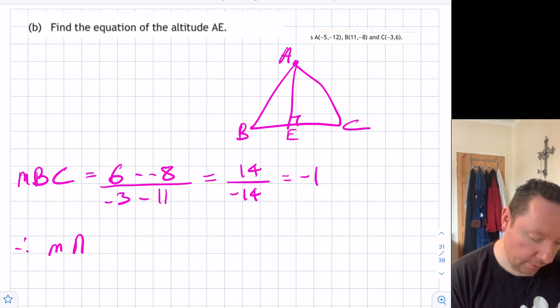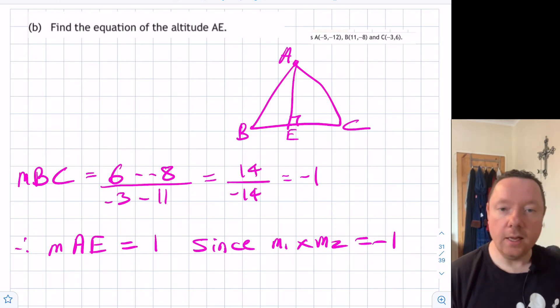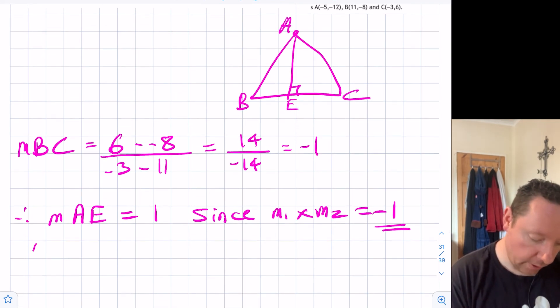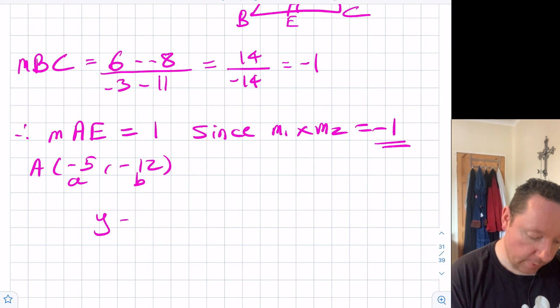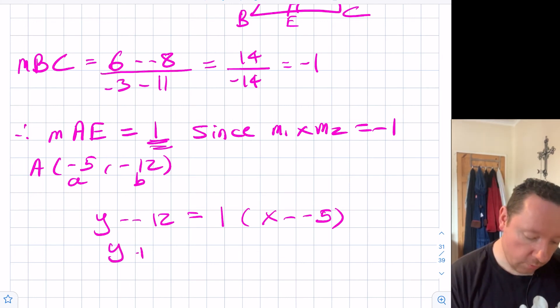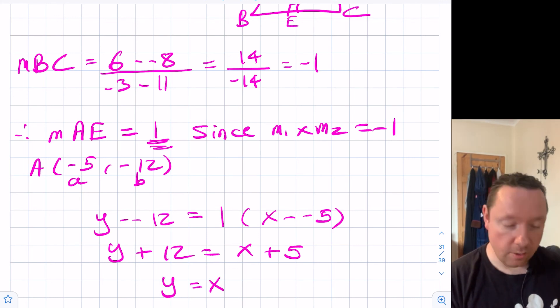We can now use y minus b equals mx minus a with point A. We've got our gradient of 1. Our point A is (-5,12). Using y minus b equals mx minus a, y minus 12 equals 1 times x minus -5. So y plus 12 equals x plus 5. Or to put that in a nicer way, y equals x minus 7.